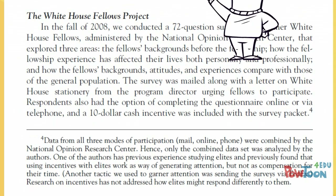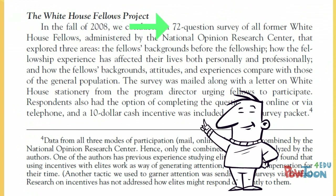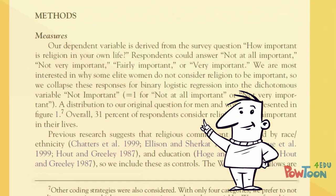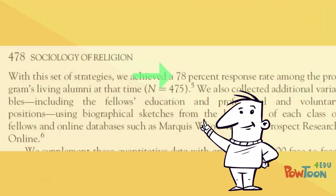Whether the research is quantitative or qualitative, the authors should always explain how they went about the study. This is the methods section. Here we find out if the authors used surveys, interviews, observations, or any other research methods. We also should learn about the sizes of the sample.